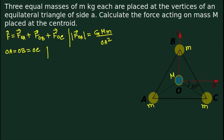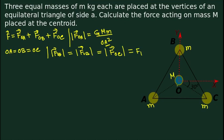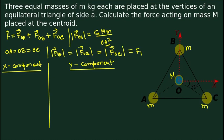Since OA equals OB equals OC, the magnitudes of FOA, FOB, and FOC are all equal — let's call this magnitude F1. We can now calculate the net force on M by breaking each force into components. We set up a coordinate system at the centroid O.